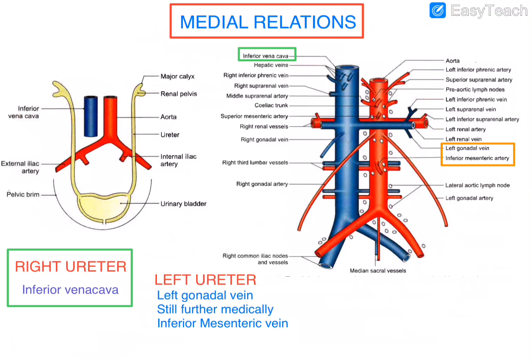Now we will see the medial relations of the right ureter and the left ureter. For the right ureter, only the inferior vena cava is medially related. In the case of the left ureter, the left gonadal vein — a tributary of the inferior vena cava — is medially related. Further medially, the inferior mesenteric vein is also related to the left ureter. These are all the relations of both ureters in the abdominal part.